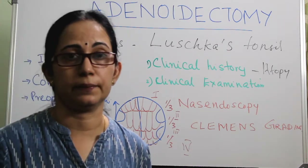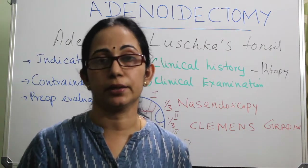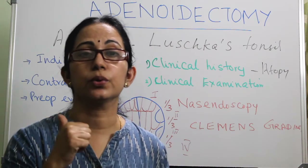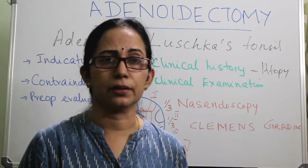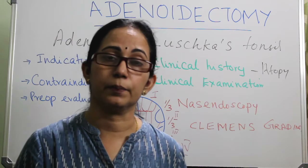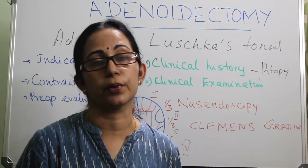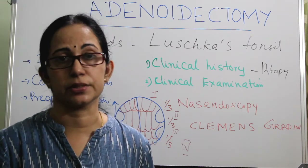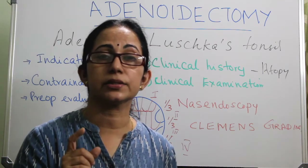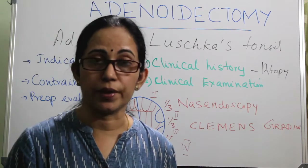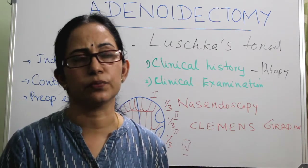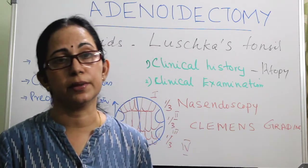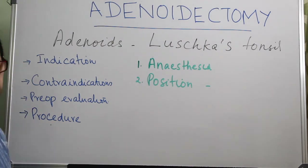Blood examination is also very important: bleeding time, clotting time, hemoglobin, total count, differential count, platelet count. If you suspect any blood coagulation pathology, also order APTT and prothrombin time. In pre-op evaluation, X-ray nasopharynx is also important. Adenoids are radiologically visible by 4 to 6 months of age in all infants, but if you see a radiologically visible soft tissue mass filling the nasopharynx at birth, always think of congenital disorders like meningocele or encephalocele, because at birth adenoids will not be radiologically visible.